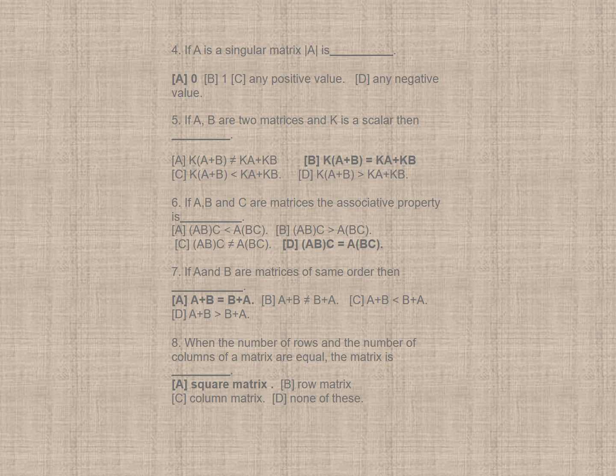Question 7. If A and B are matrices of same order, then your correct option is A, A plus B is equal to B plus A. Question 8. When the number of rows and the number of columns of a matrix are equal, the matrix is a square matrix. So, correct option is A.